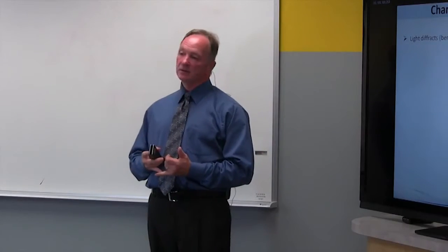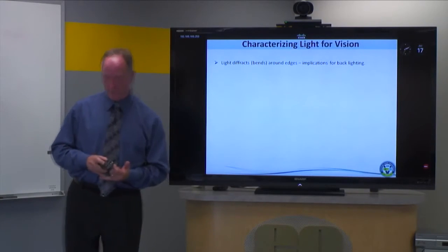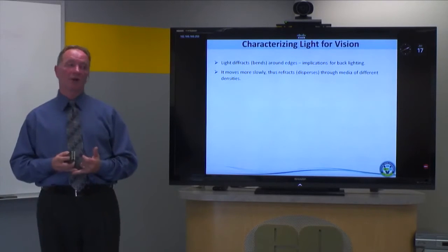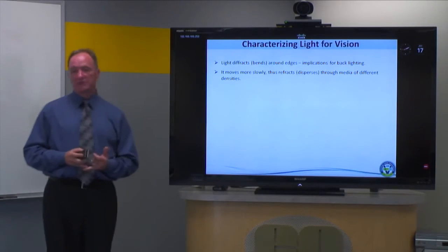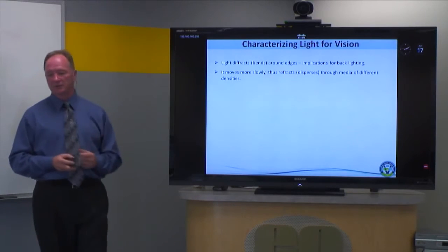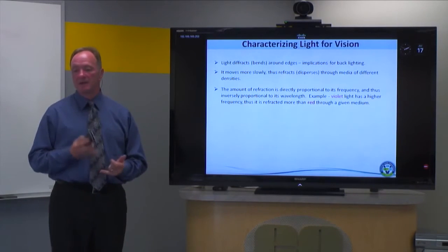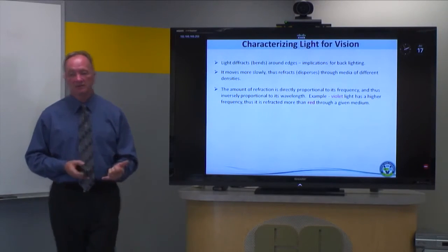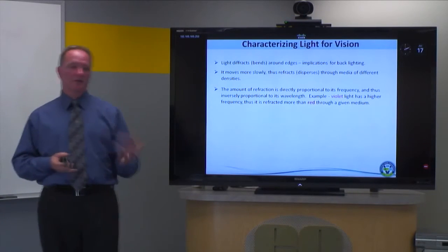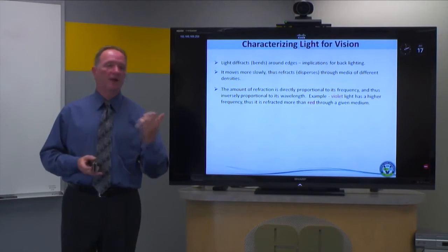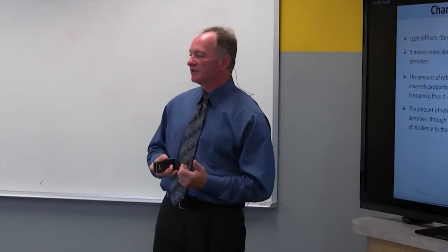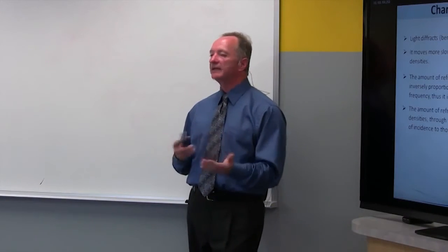Other useful concepts, particularly with respect to diffraction as it applies to backlighting: light does diffract or bend around edges. It moves more slowly or refracts through media of different densities, the speed of which is relative to the density difference. The amount of refraction is proportional to its frequency and inversely proportional to its wavelength. For example, violet light has a higher frequency and shorter wavelength, and is refracted more than red through a particular medium.